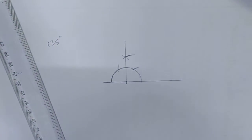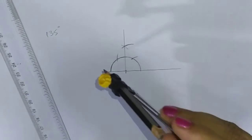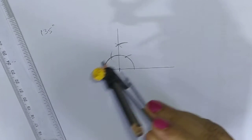But the requirement here is of 135, so now if this is 90, again we need 45. So this 90 we have to bisect.